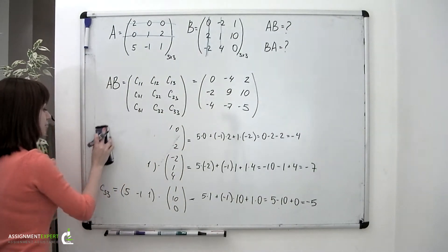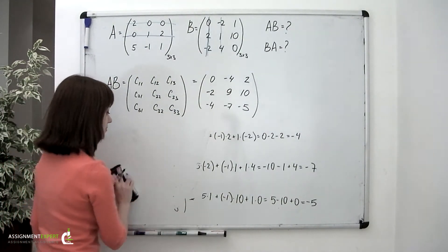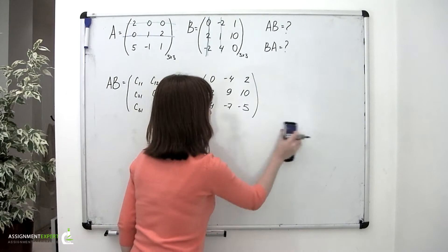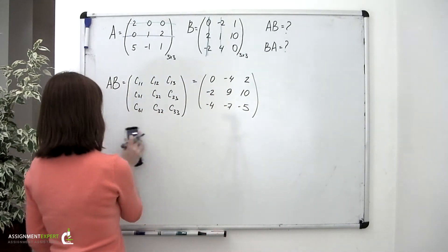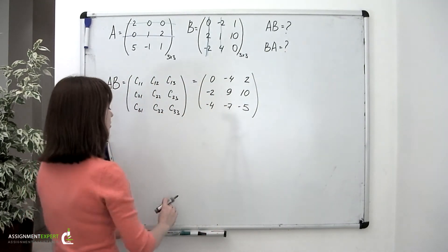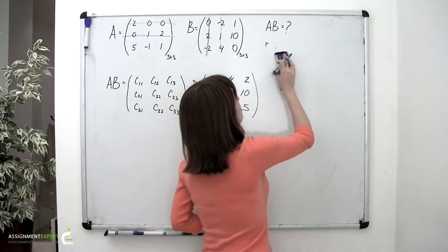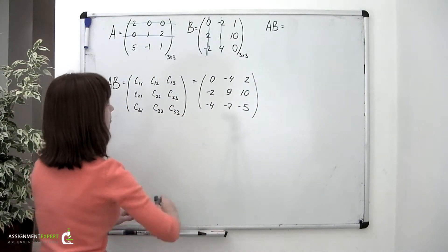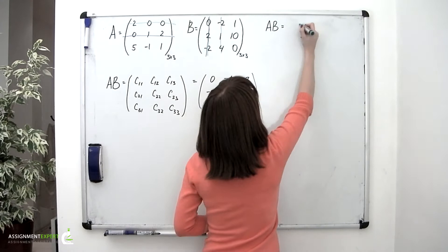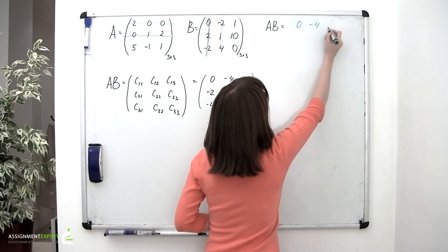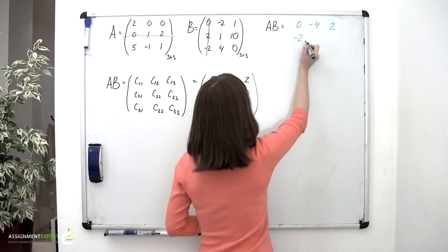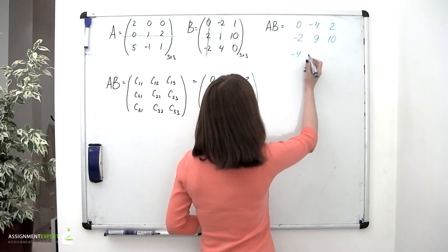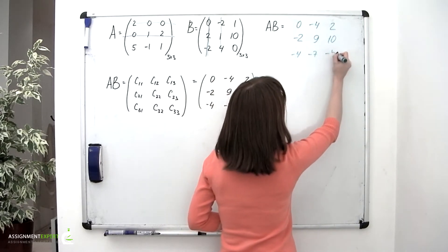And that is our first product, A times B. So A times B equals the matrix with rows: 0, negative 4, 2; then negative 2, 9, 10; and negative 4, negative 7, negative 5.